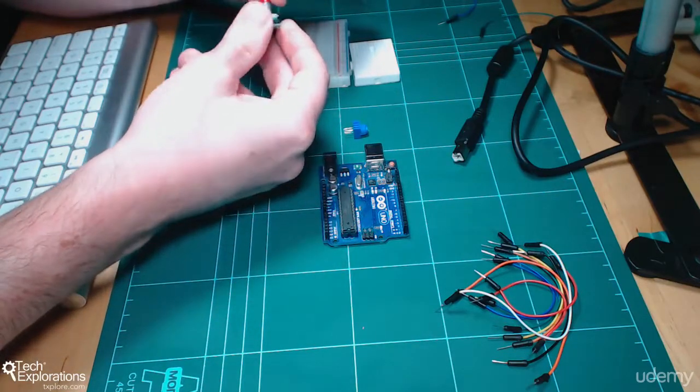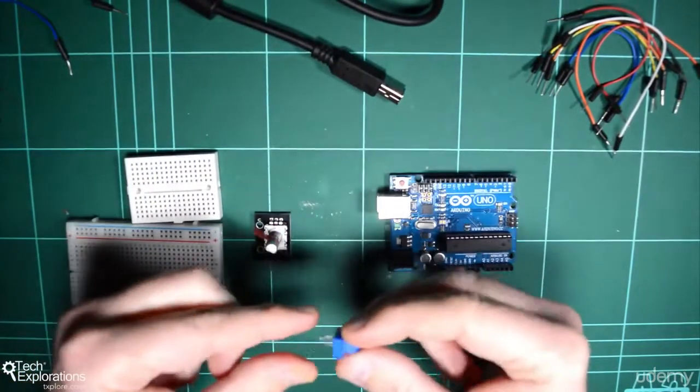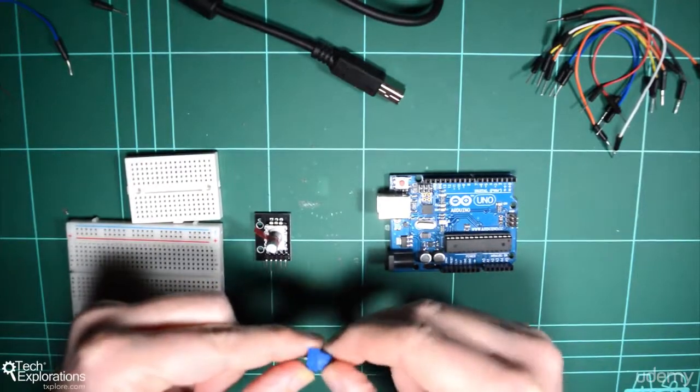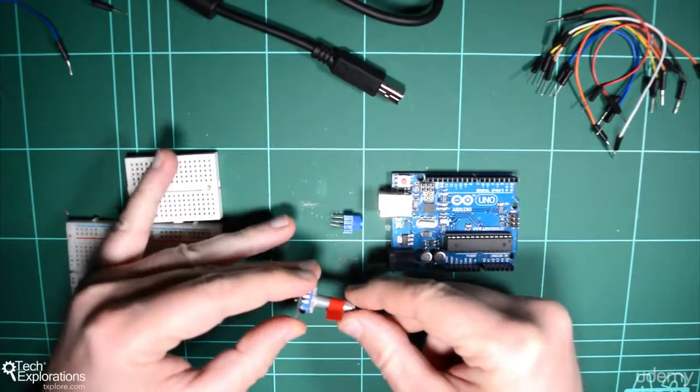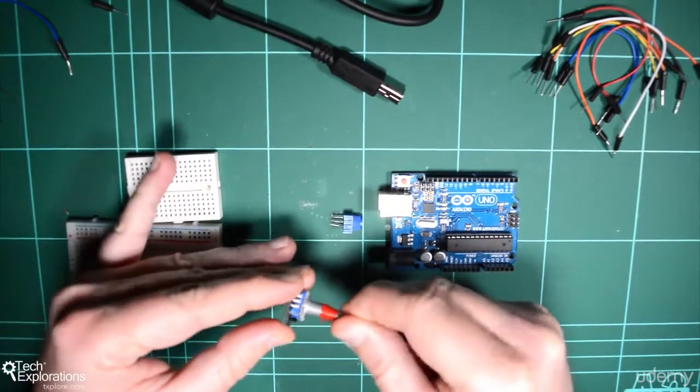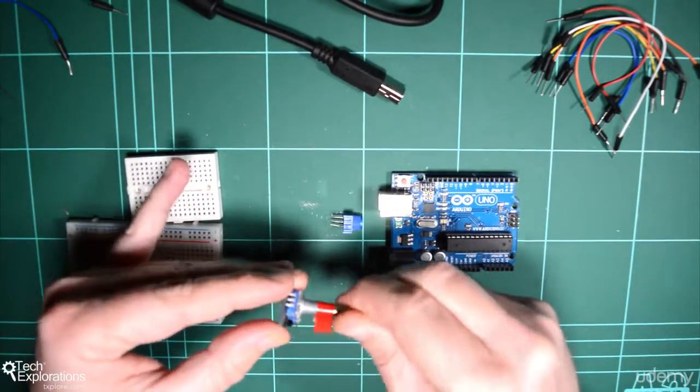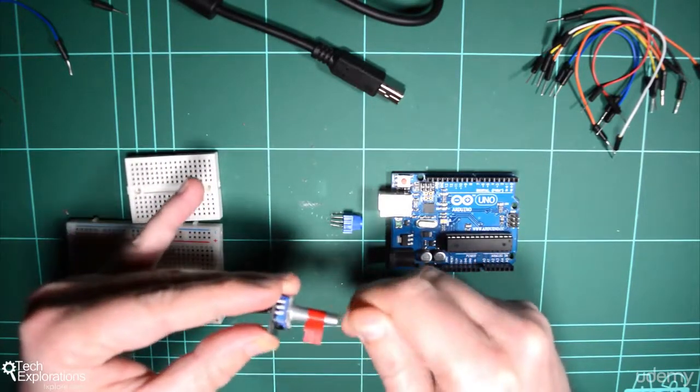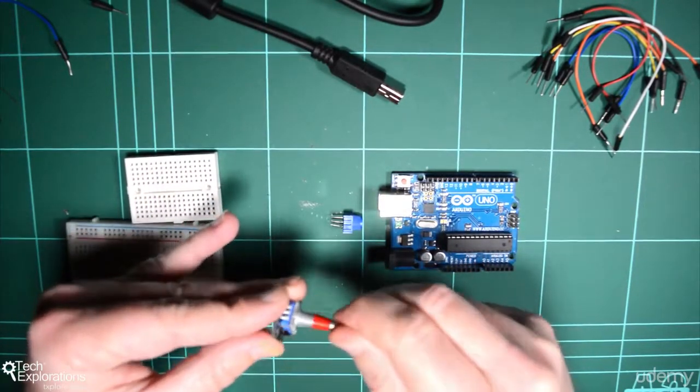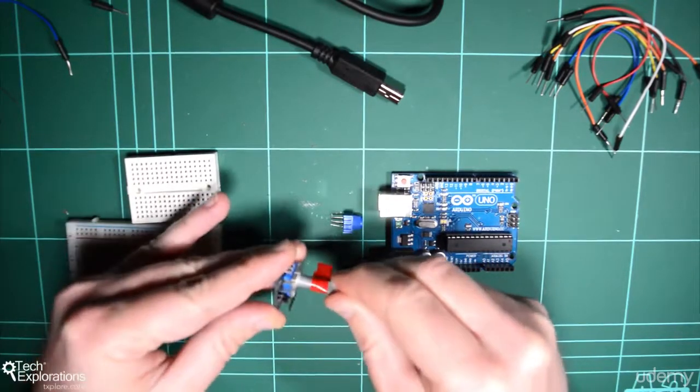So a rotary encoder, unlike a potentiometer, is a device that allows us to detect change in the position of this knob. And not only that, but this knob can be turned indefinitely. As many rotations as you like, there is no end to the ability to rotate this knob.